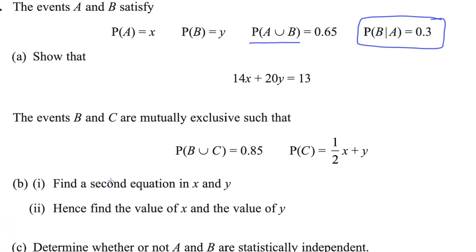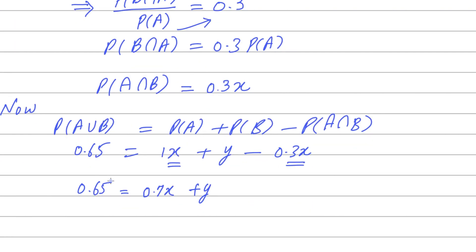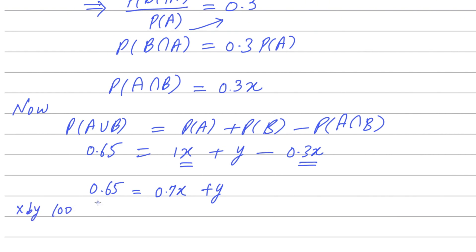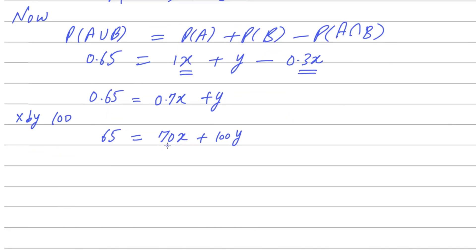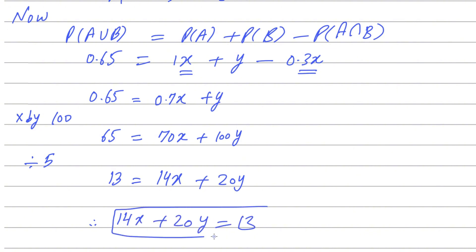Looking back at the question, there are no decimals. To remove the decimals, multiply by 100 — this gives 70X plus 100Y equals 65. Since every term is divisible by 5, divide through by 5 to get 14X plus 20Y equals 30. This is as required.